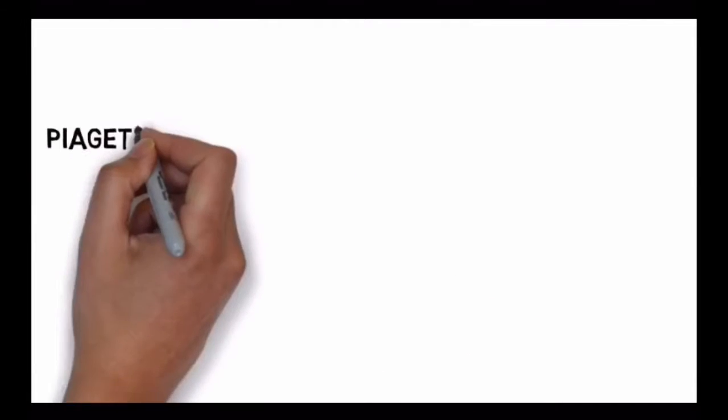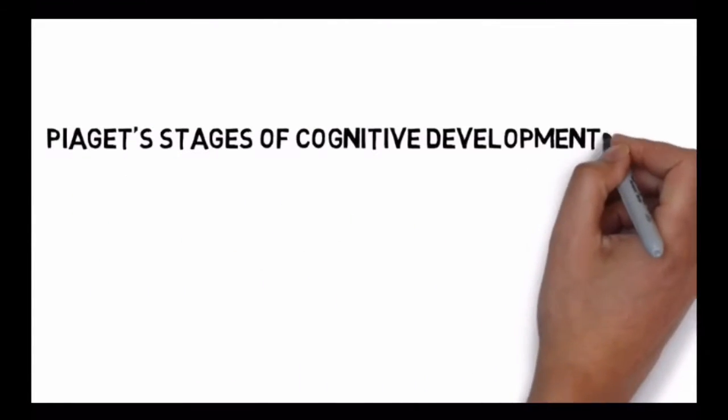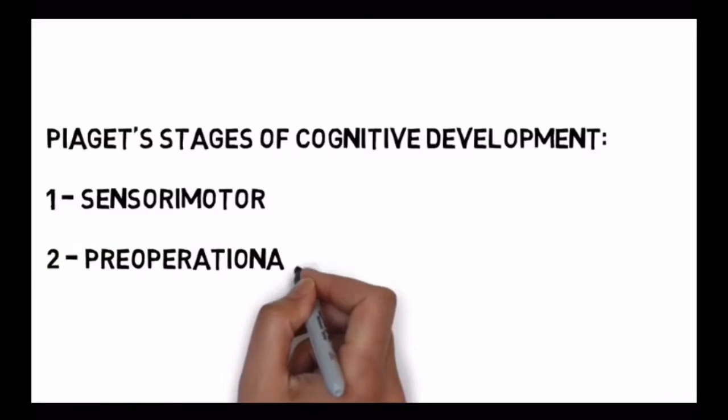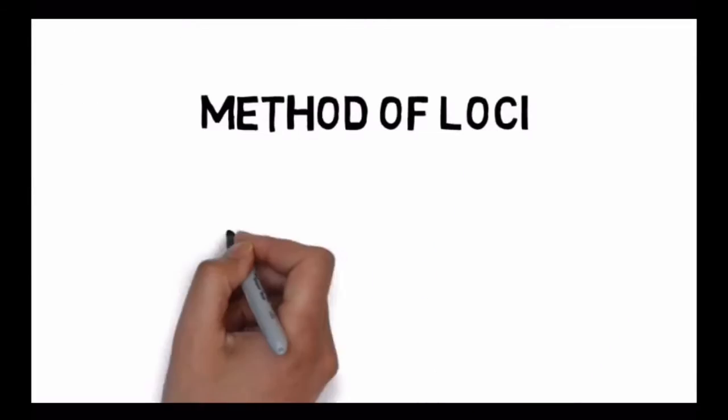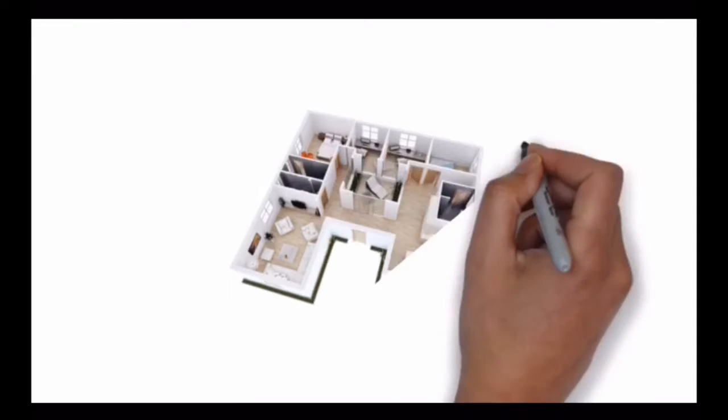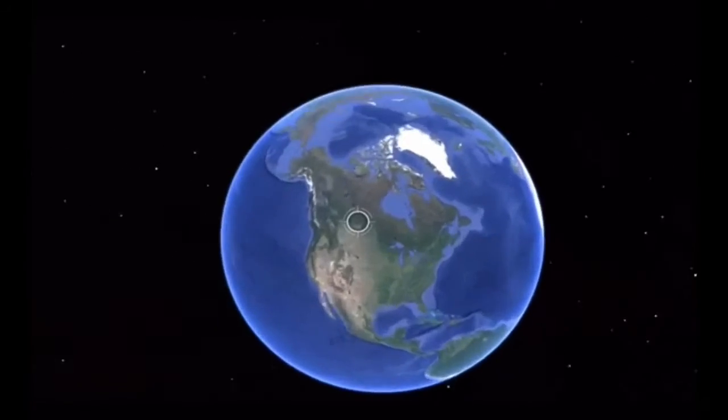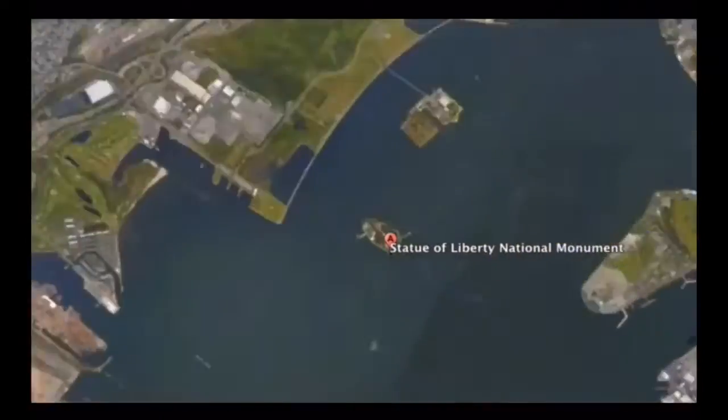Piaget's theory of cognitive development consists of four stages, with several key ideas attached to each stage. We'll memorize this theory using a combination of keywords and the method of loci. Typically, the method of loci requires you thinking about locations very familiar to you, like your house or your path to work. In this video, we'll use locations that are familiar to just about everyone.